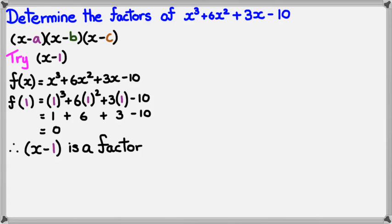Now, I need to figure out the other two factors. But the one thing I know about the constant, particularly the -10, is if I do (-a)(-b)(-c), I should get -10. So, -a times -b times -c should equal -10.